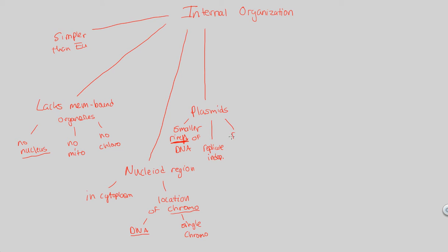The plasmid for the most part contains a few non-essential genes — some extra genes. They're still important, but not essential, meaning they're not going to be the death of the bacterial cell if it doesn't have a plasmid. It's just an evolutionary extra that some bacteria and prokaryotes have.